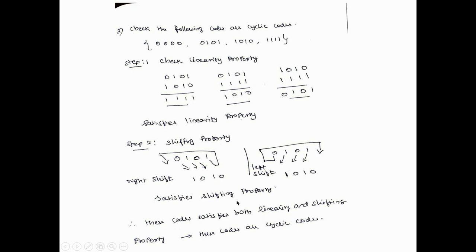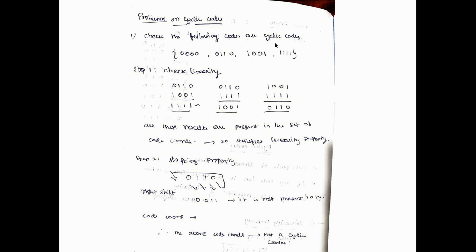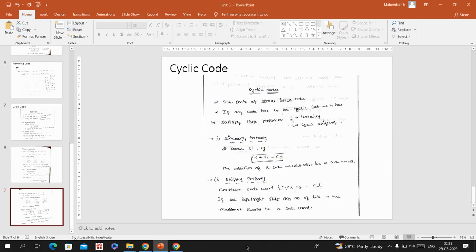This code satisfies the shifting property. Since it already satisfies linearity and now also satisfies the shifting property, this set of codes is called a cyclic code. To summarize: a cyclic code is a subdivision of a linear block code. It must satisfy two properties — linearity and shifting. In the first problem, linearity was satisfied but shifting was not, so it was not a cyclic code. In the second problem, both properties were satisfied, so it is a cyclic code.